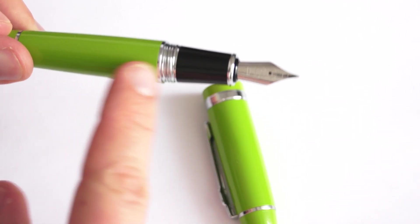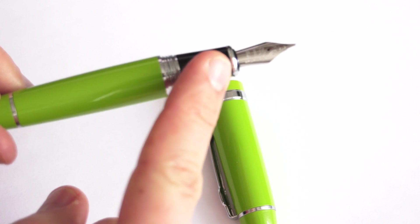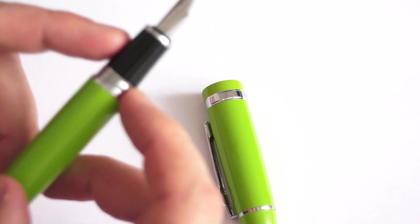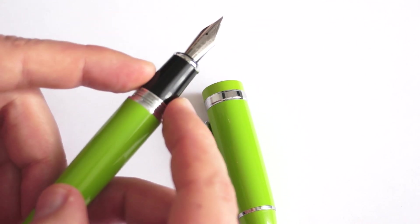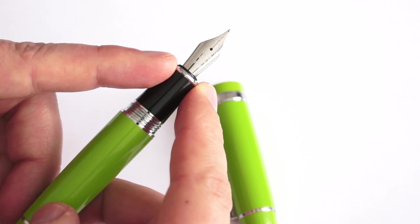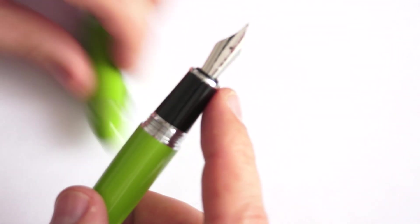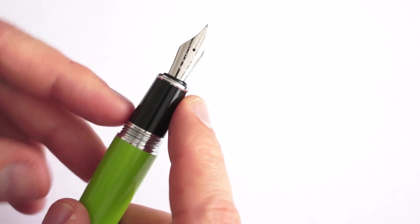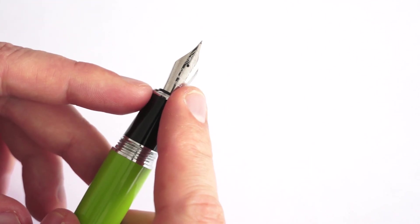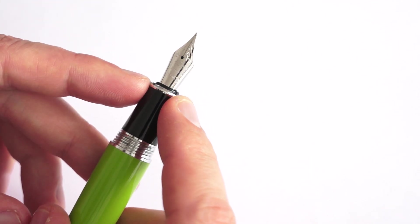Inside we see the section. The section is conical and tapers down without any flare. Then we have the Jinhao nib which is a steel nib, number six I would guess.